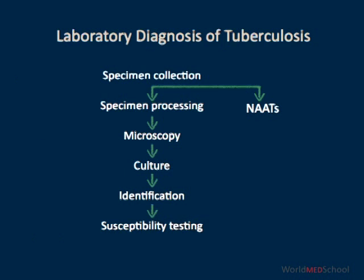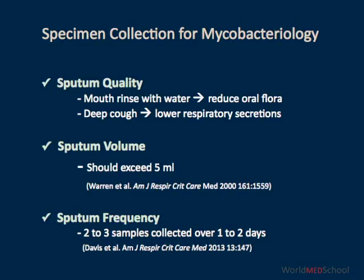Laboratory diagnosis of tuberculosis by a conventional method is a multi-step procedure that starts with specimen collection. The first requirement for collection of a good quality sputum sample is an alert and cooperative patient who can be instructed to rinse out his or her mouth with water. The patient then must be encouraged to cough deeply to expectorate a specimen of lower respiratory secretions. In order to increase the sensitivity of culture and microscopy, the volume of sputum specimen should exceed five mils. And lastly, the patient has to be instructed to provide two to three samples collected over one to two days.